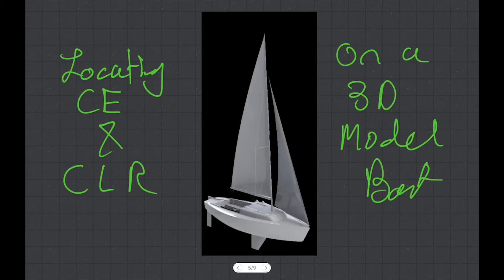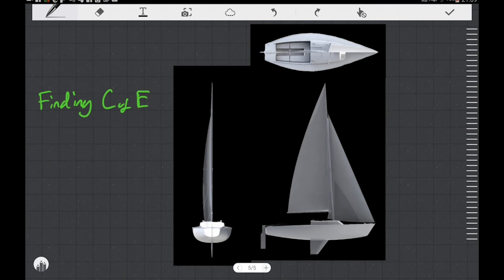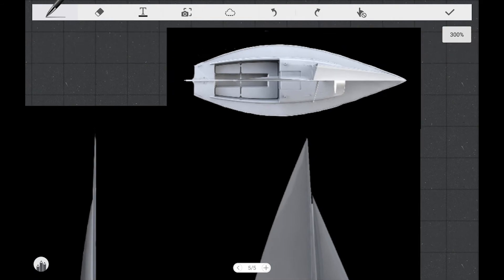Now that we've said all that, I want to take you through a process of diagramming the CE and CLR on a 3D model sailboat. This particular sailboat is a J-22, with a main and Genoa. The process would be essentially the same for a cat-rigged sailboat with only a mainsail — we would just have to skip some of the steps that we do to combine the CE on the main and the Genoa. Here you can see an orthographic projection of the sailboat showing the boat from the top, side, and rear. The first thing we're going to do is zoom in on the top of the sailboat.